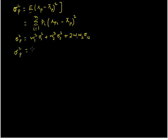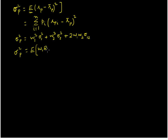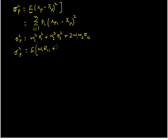The variance of the portfolio can be written using the expectations operator E. Inside the square bracket we write the portfolio return: if we are investing our money in two assets, the portfolio return is w1 times the return on asset 1 if outcome i happens, plus w2 times the return on the second asset if outcome i happens. From this we subtract the mean portfolio return, which is w1 times the mean return on the first asset plus w2 times the mean return on the second asset.